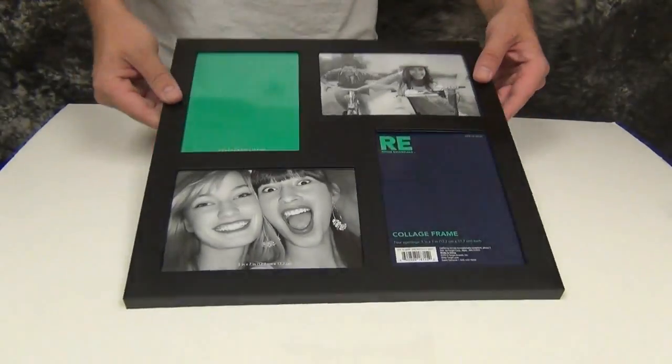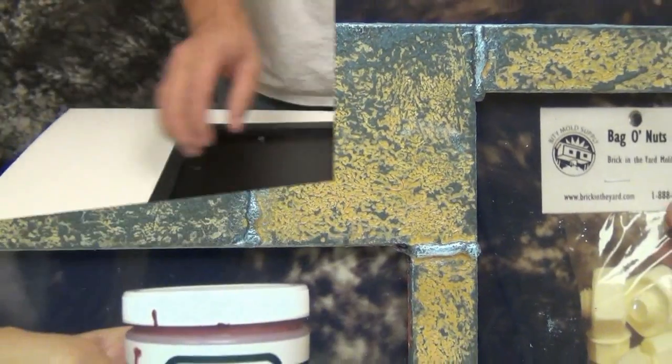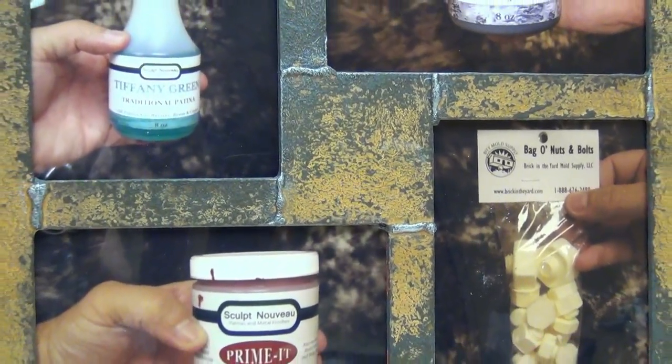Today we're going to show how to refinish a plastic picture frame to look like it's made of rusted sheet metal.